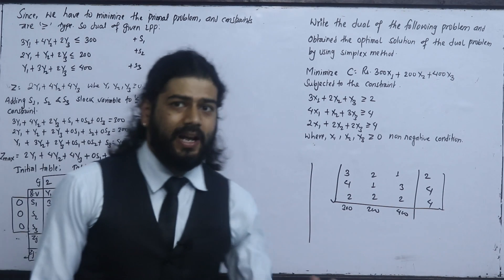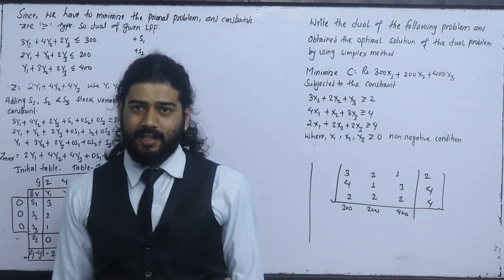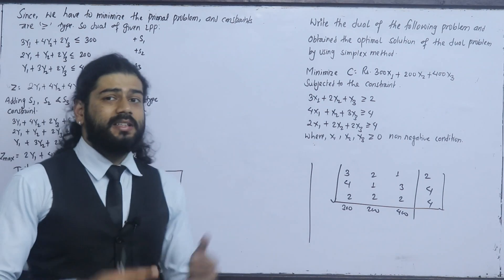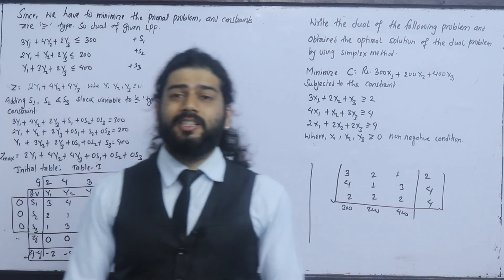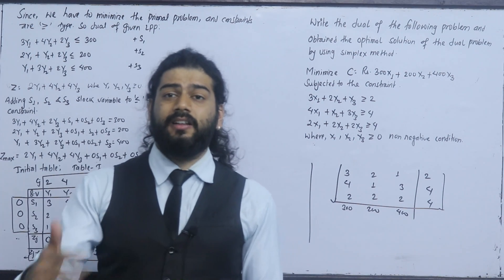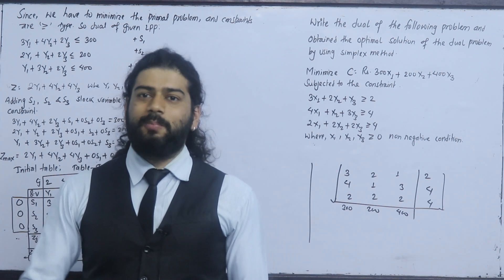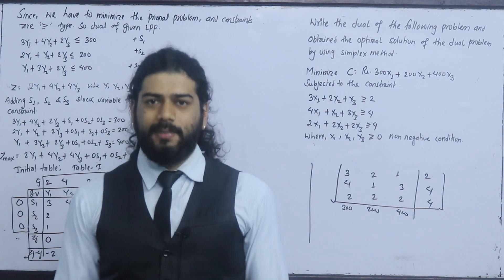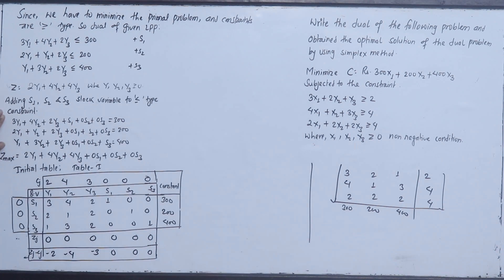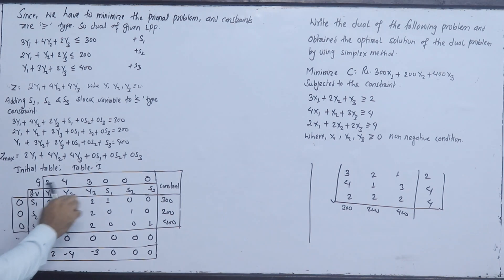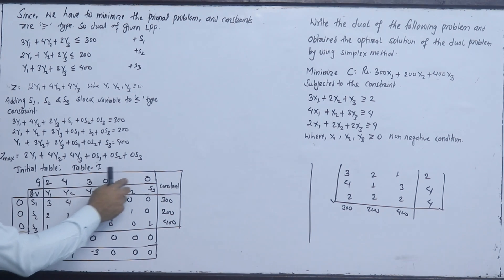This part can be solved using the simplex method. We introduce the simplex method for the first, second, and third parts. We convert to standard form with the table. The basic variables are s1, s2, s3 with objective coefficient option 0, 0, 0.